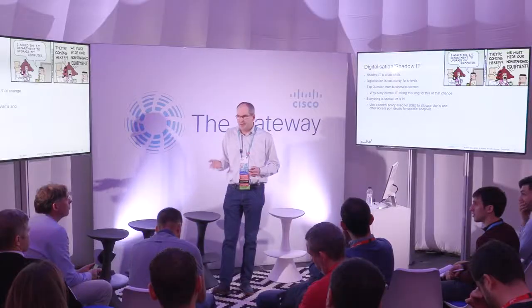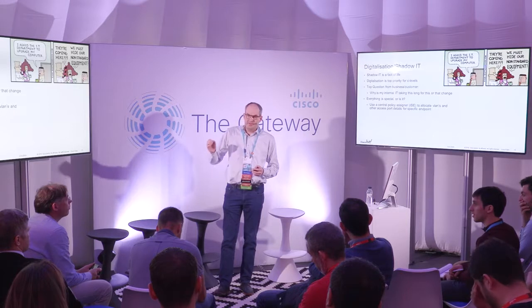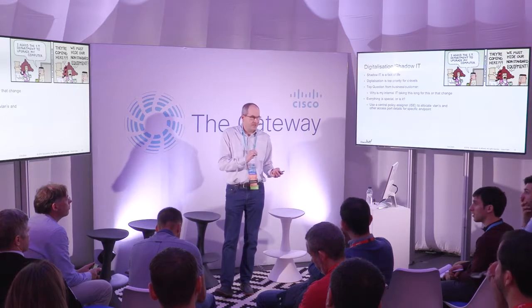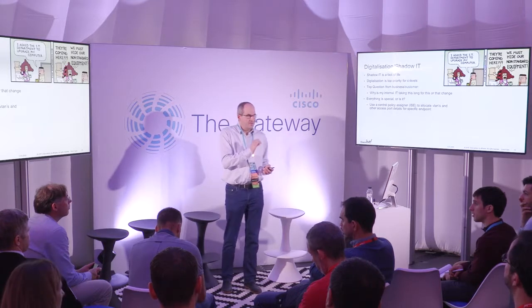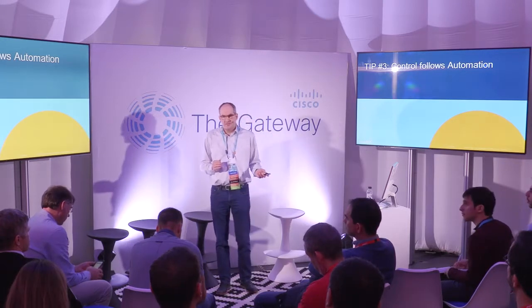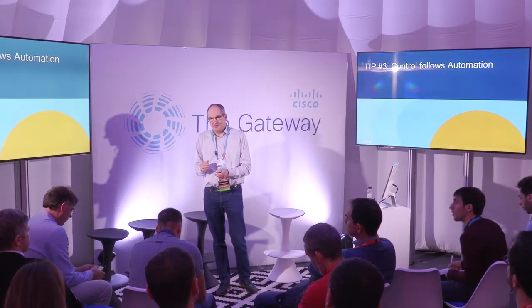If you use a central policy like Cisco ISE server or another RADIUS server, you can use that for network access control and implement VLAN assignment and access list assignment from that central policy. That way you can create a standard configuration of your access ports. That means I'm getting into tip 3: you can only control after you have implemented automation.